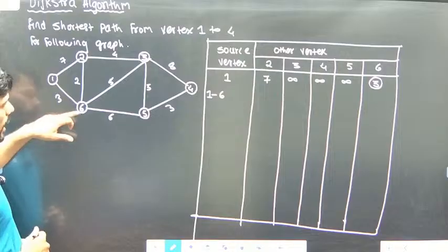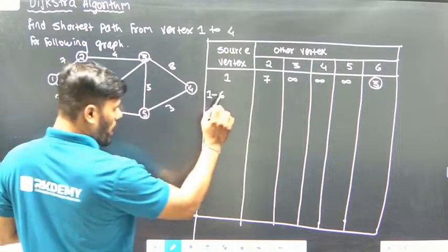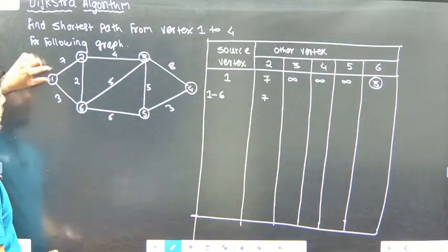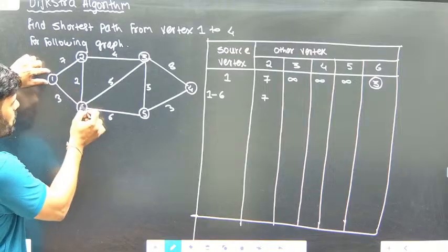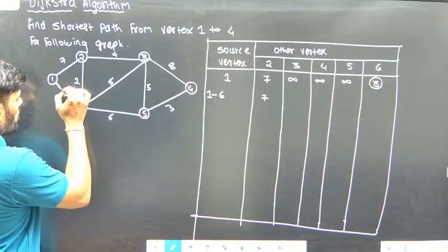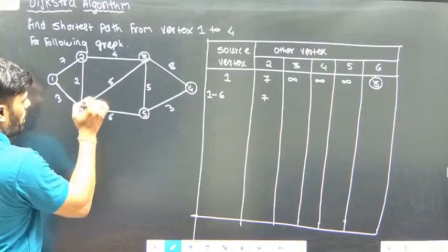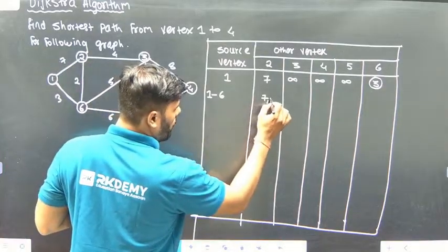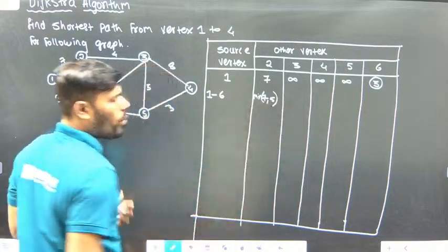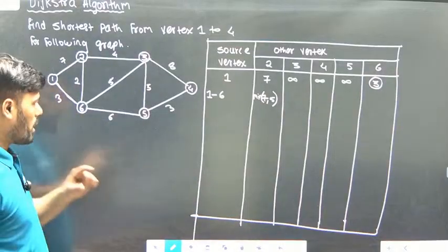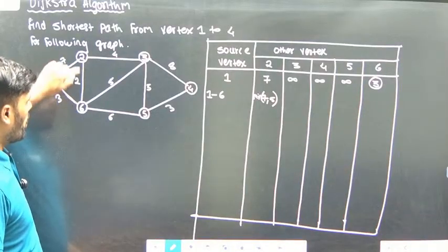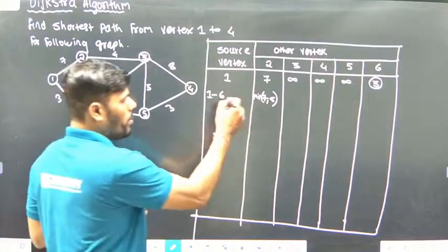Now the next take vertex will be relaxed. So again, the distance 1 to 2 is already known as 7. But we need to check: can we reach vertex 2 via vertex 6? Via 6, it would take 3 plus 2, that is 5. Here the current distance is 7, but via vertex 6 we get 5. So we have two options: one is 7, one is via 6, which gives 5. Five is better than 7, so the minimum is 5.